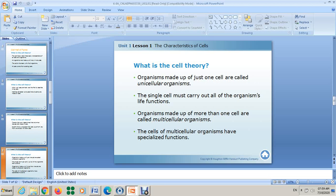The single cell must carry out all of the organism's life functions. What about humans? What about animals and plants? These organisms made up of more than one cell are called multicellular organisms. Think about your body. We have specialized cells. What does specialized cells mean? It means cells that have a specific function to do. For example, red blood cells carry oxygen, nerve cells carry electrical signals.